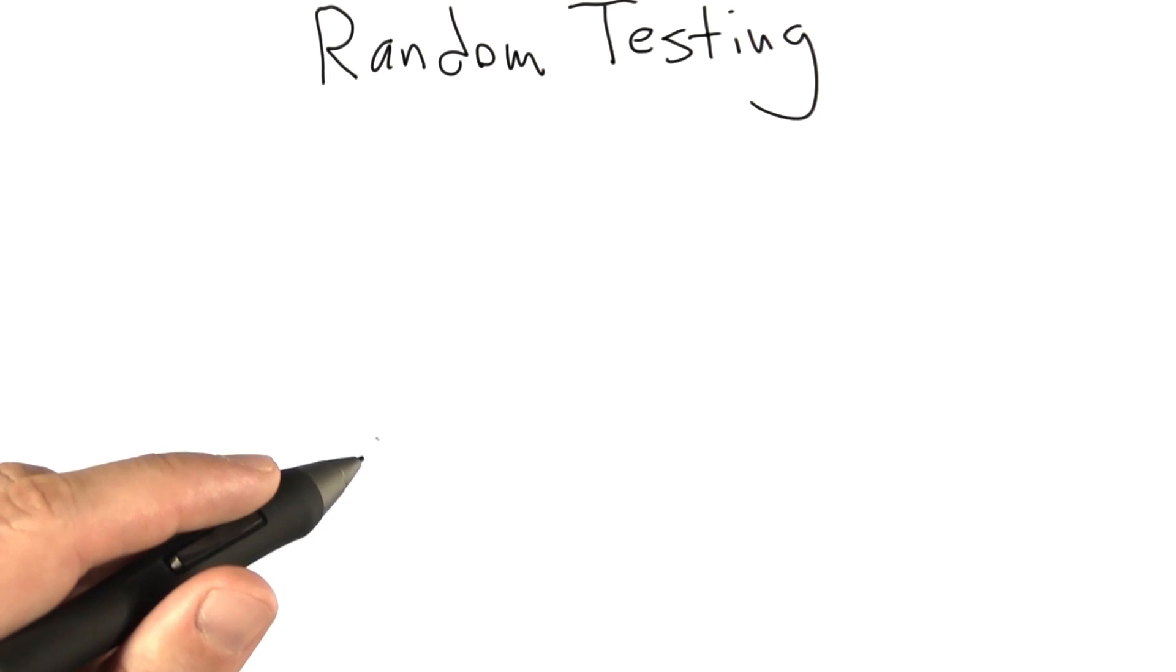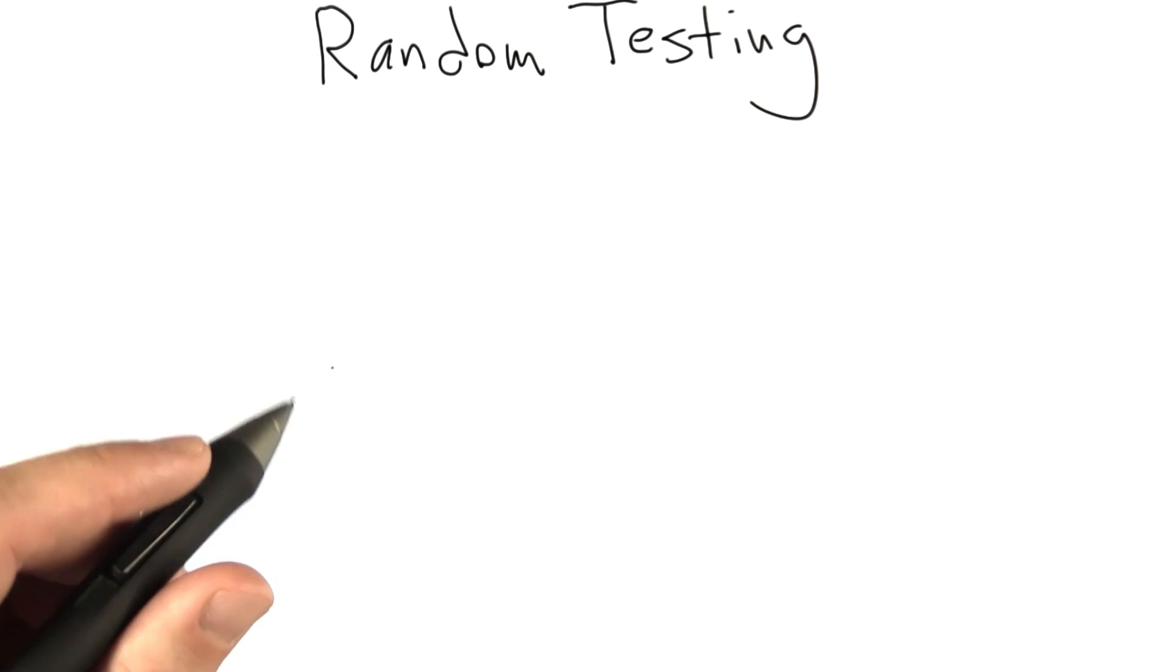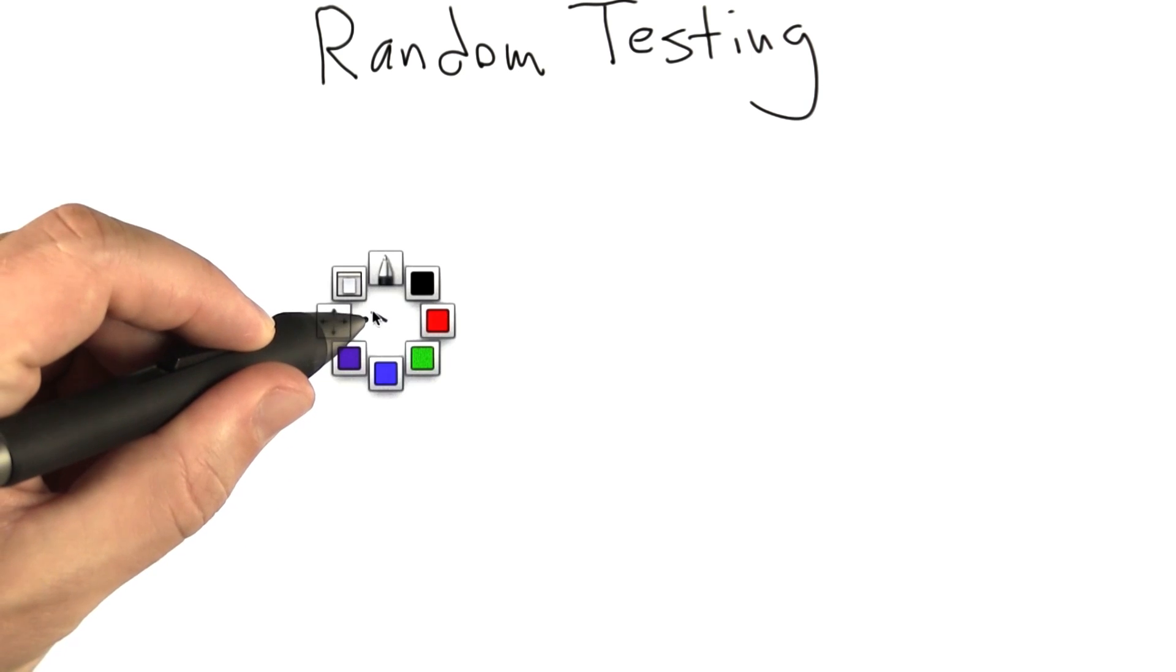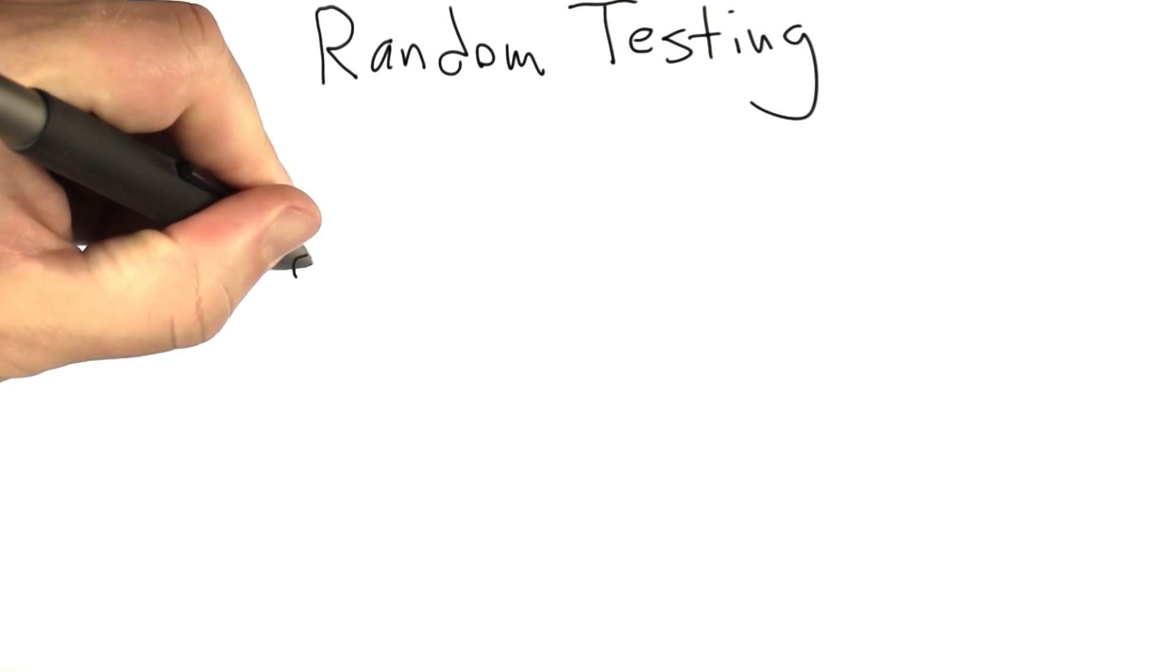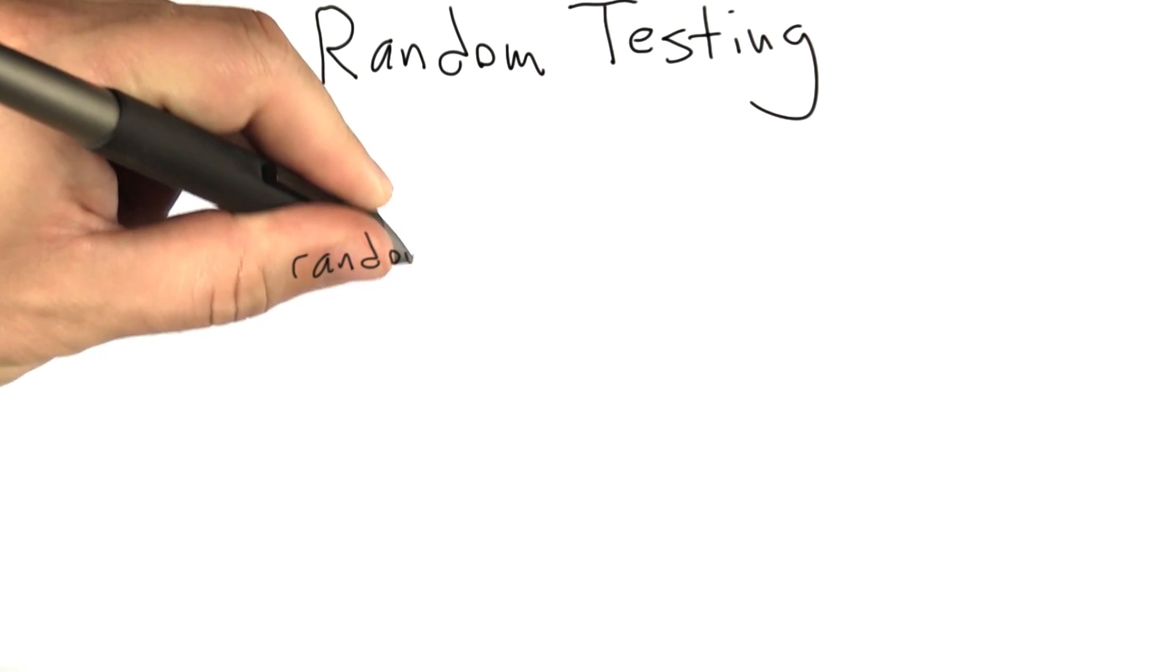Random testing just means that test cases are created, at least in part, using input from a random number generator. This became my favorite testing method a few years ago when I noticed that without even realizing it, I'd written a random tester for every piece of software I ever wrote where I actually cared about its correctness. So I've written at least a dozen random testers. Let's look at how this works.